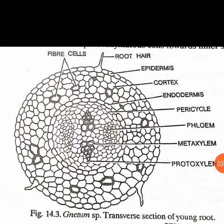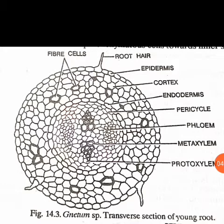The xylem and phloem are not collateral, not conjoined - they are arranged radially, separated by parenchymatous tissue. In Pinus, the xylem is endarch, meaning protoxylem is present towards the inner side and metaxylem towards the outside. But in Gnetum, the protoxylem is present towards the periphery, whereas the metaxylem is present towards the center towards the pith. So in this case it is exarch, not endarch.